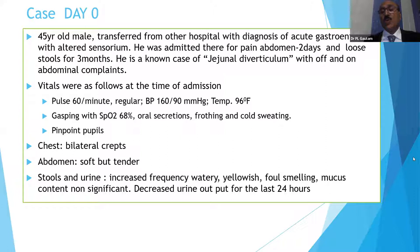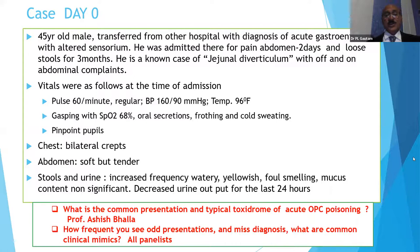Pupils were pinpoint, creps present, abdomen hot and tender. There was decreased urine output for 24 hours and less mucus in stools. I'll ask Dr. Ashish Bhalla — what is the common presentation in your experience and what is the typical toxidrome of acute OPC poisoning in your setup?